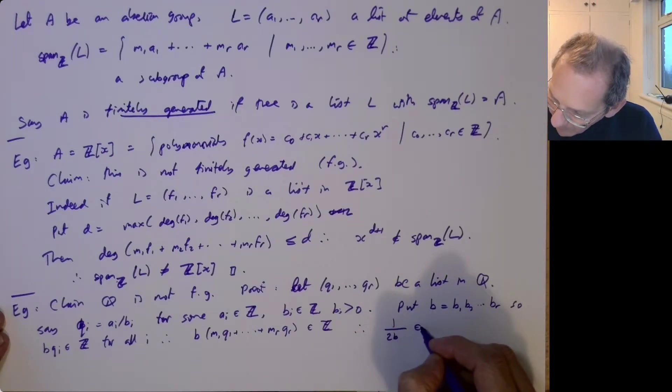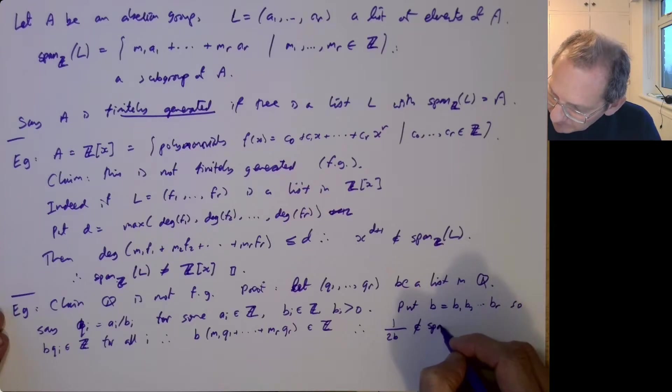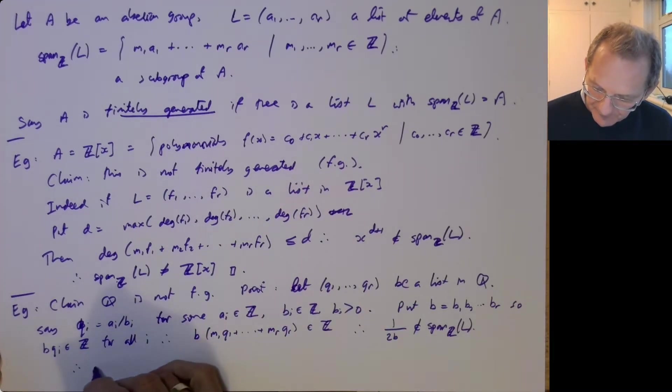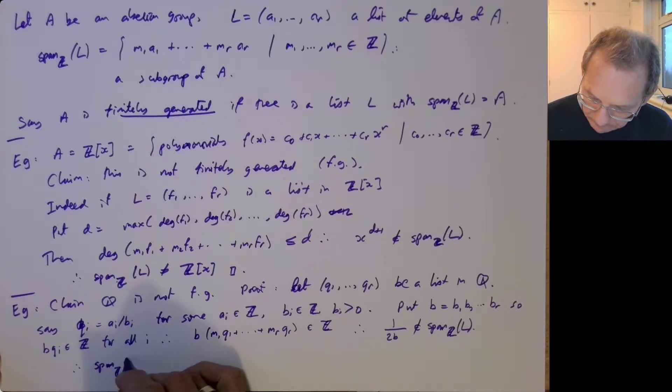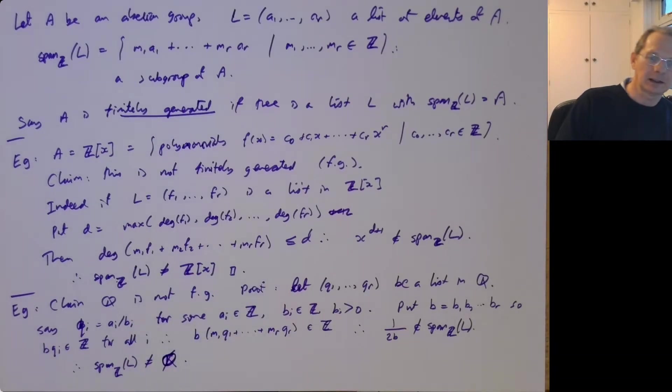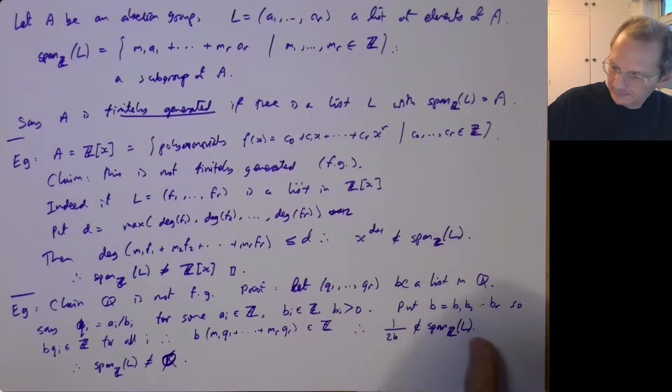And so if I take something like 1 over 2B, we see that that can't be in the span. I mean, if this was in the span, then you would multiply it by B and you get an integer. But if you multiply this by B, obviously you get half, which is not an integer. So we see that the span is not equal to Q. So Q can't be written as the span of some finite list either.